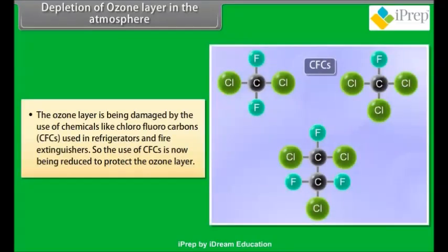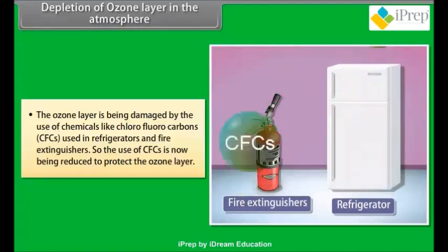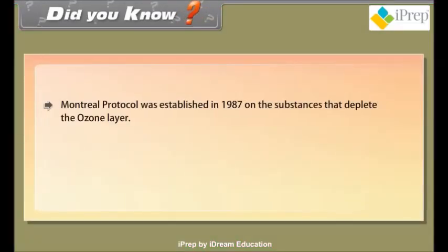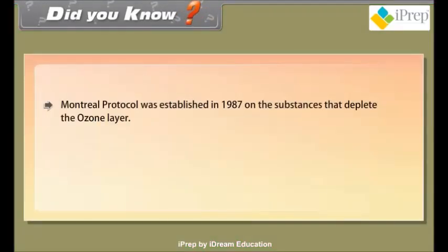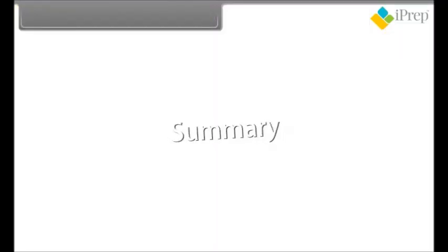The ozone layer is being damaged by chemicals like chlorofluorocarbons (CFCs), used in refrigerators and fire extinguishers, so the use of CFCs is now being reduced. The Montreal Protocol, established in 1987, is an agreement on substances that deplete the ozone layer. It has successfully reduced the global production, consumption, and emission of ozone-depleting substances.